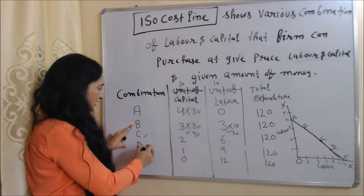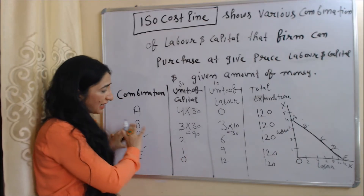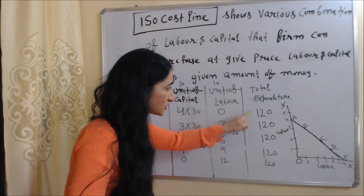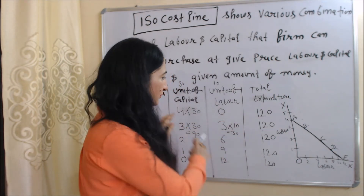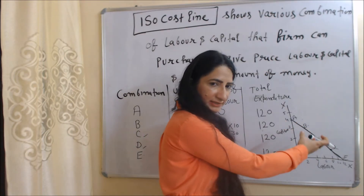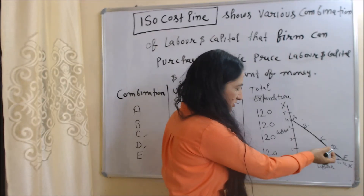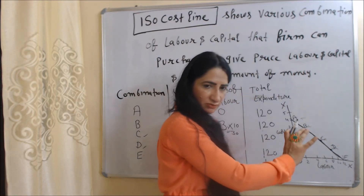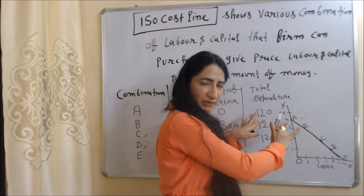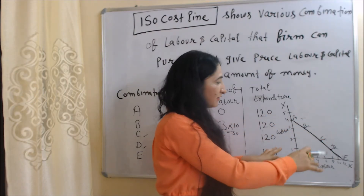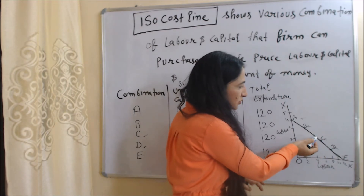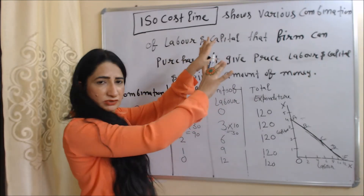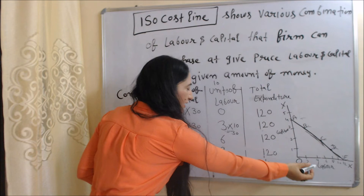Similarly, combinations C, D, and E all have a cost of 120 rupees. When we convert this table into a diagram, all combinations A, B, C, D, E have the same cost of 120 rupees. When we join all these combinations, we get our iso cost line, which shows various combinations of capital and labor a firm can purchase at a given price and given budget.